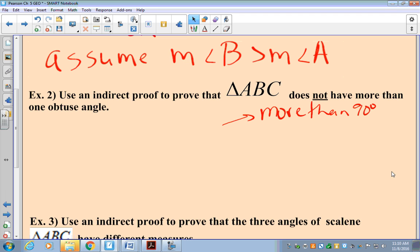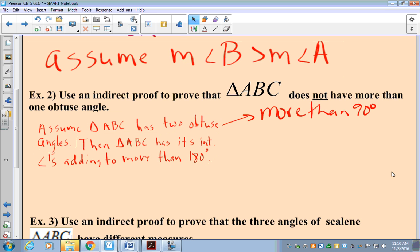So we're going to use an indirect proof to prove that triangle ABC does not have more than one obtuse angle. And just to remind us, an obtuse angle is more than 90 degrees. So the first thing that we're going to do is we're going to assume that triangle ABC has two obtuse angles. So step number one is to assume the opposite.